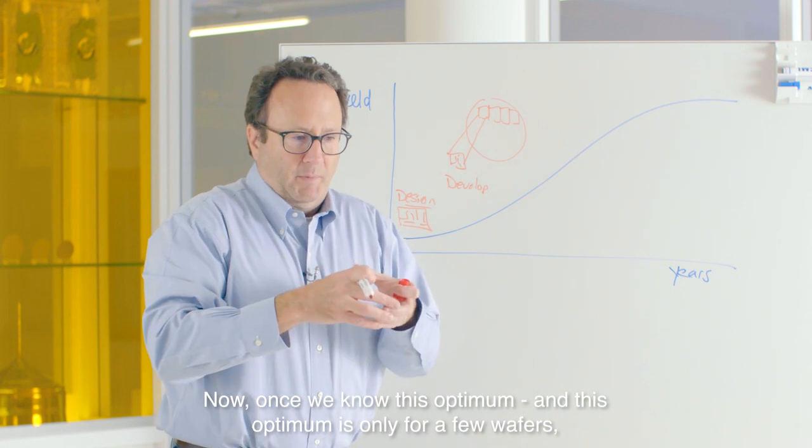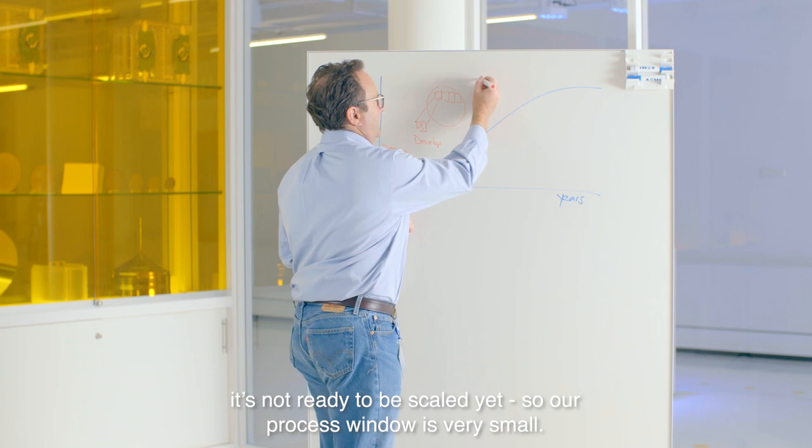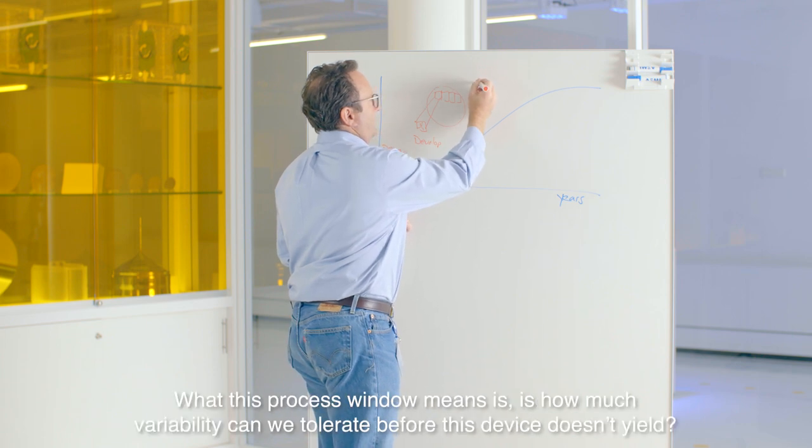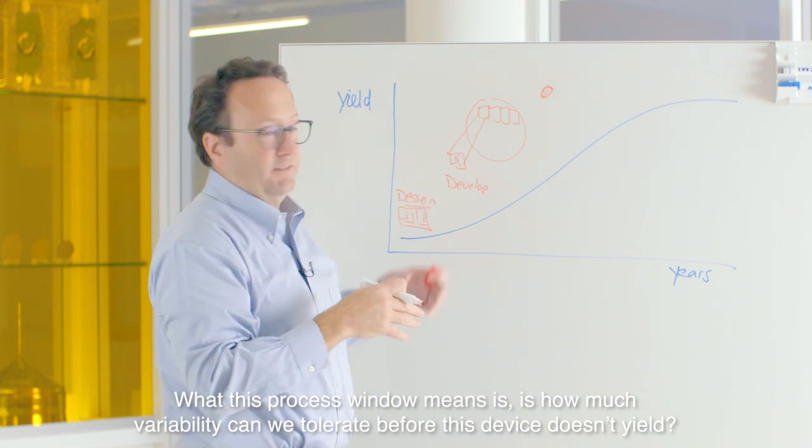It's not ready to be scaled yet. So our process window is very small. What this process window means is how much variability can we tolerate before this device doesn't yield.